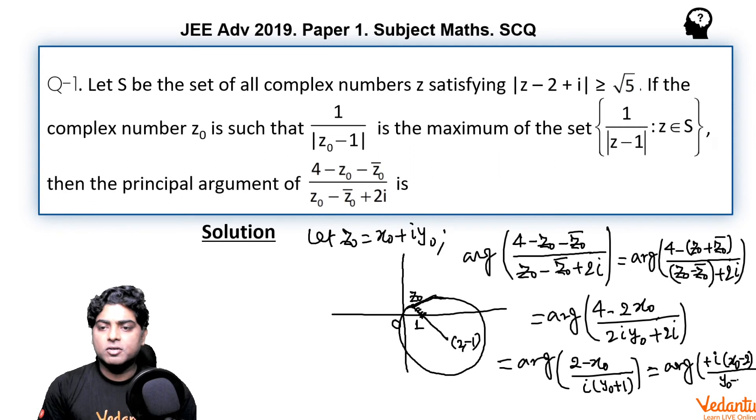Now as you can see from the picture, from the figure, x0 here is less than 2, right. And y0 obviously is positive because the point is in the first quadrant, clearly you can see from the figure.